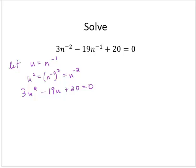I'm not sure that this will factor, so I'm going to use the quadratic formula on u. So then u would equal 19 plus or minus the square root of 19 squared, that's 381, minus 4 times 3 times 20, that's 12 times 20, that's 240, over 6.